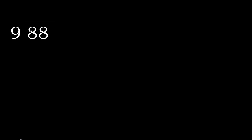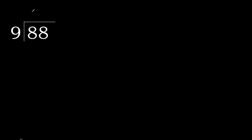88 divided by 9. 8 is less, therefore next — 88 is not less, therefore with 88: 9 multiplied by which number is nearest to 88 but not greater? 9 multiplied by 9 is 81, which is not greater.